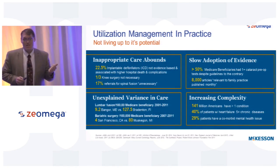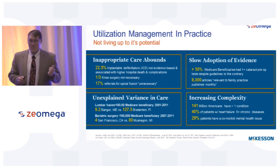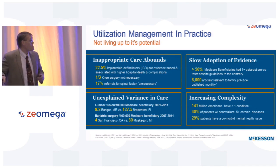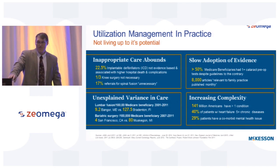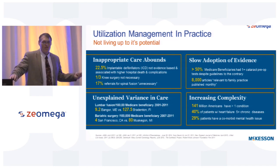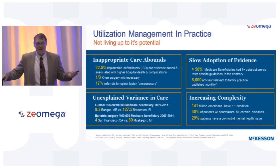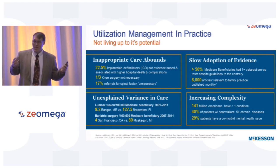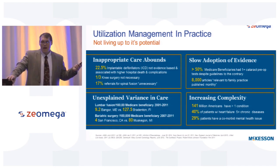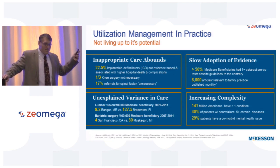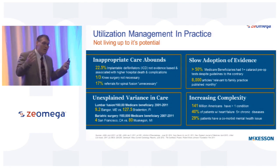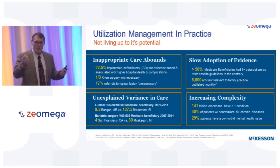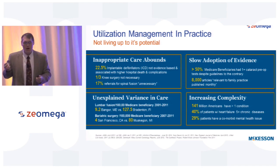Utilization management is really not living up to that potential. If we think about inappropriate care: 22.5% of our defibrillators aren't evidence-based — we're giving patients machinery they don't need. One out of every three knee replacements is not necessary. 70% of referrals for spinal fusion — not necessary. We're doing things to patients that aren't required. And about 50% of Medicare beneficiaries had a test done that was contradictory to the evidence, meaning we're not using evidence-based guidelines to do what is right for the patient.